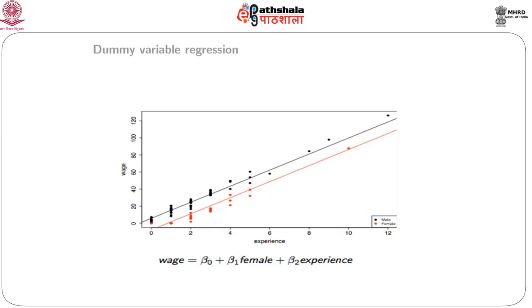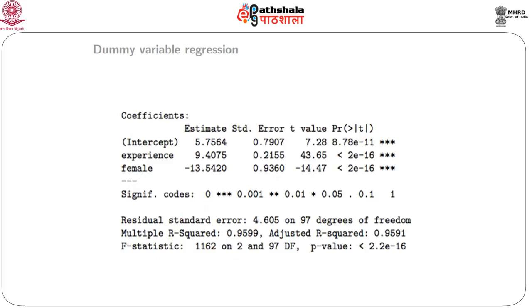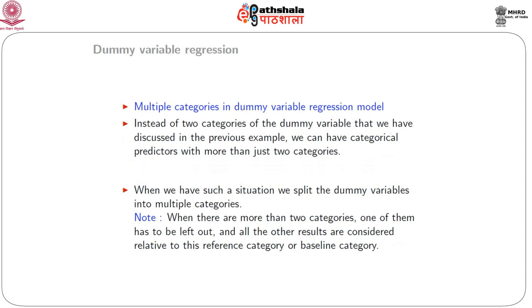Looking at the figure, the within-gender regression of wage on years of experience shows parallel lines, indicative of additive effects of experience and gender on wage. We can also see the R output, which gives the parameter estimates for experience — the continuous predictor — and the regression coefficient for the dummy variable 'female'. Both the continuous variable and the dummy variable are statistically significant, as confirmed by their corresponding p-values.